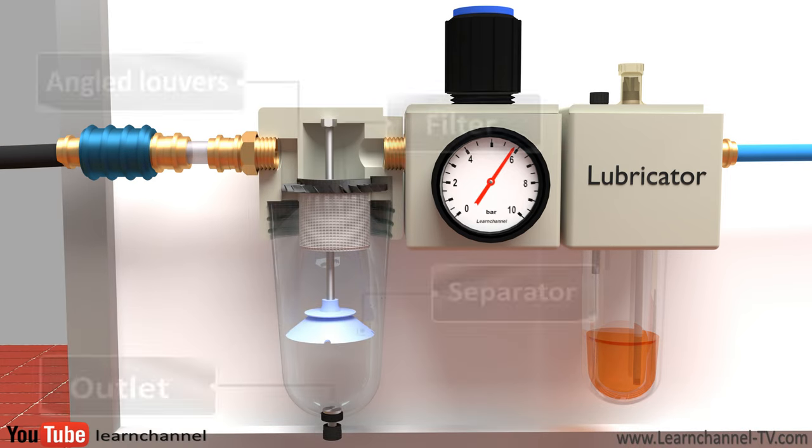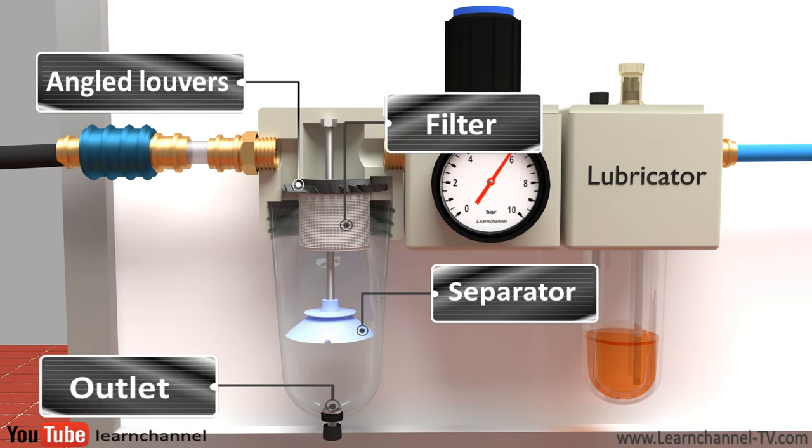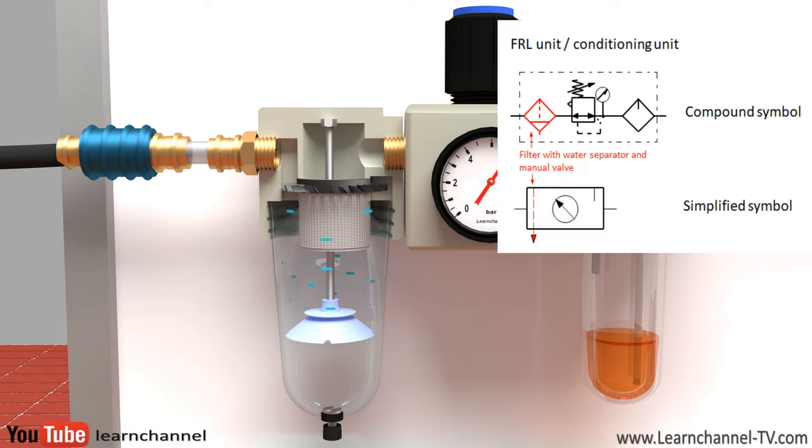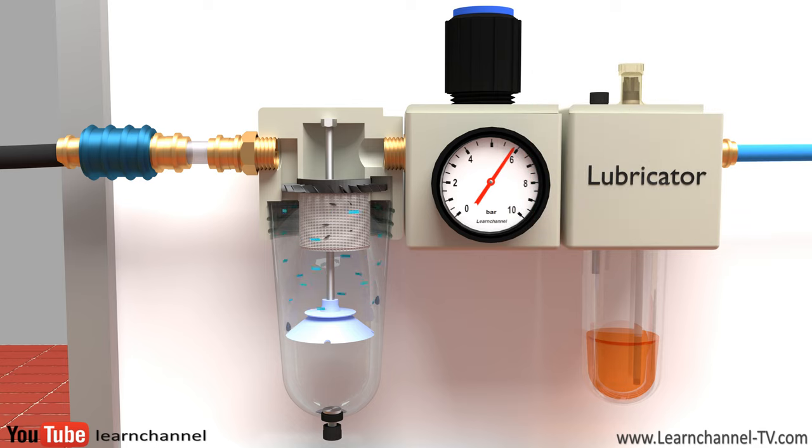Air enters the air filter through angled louvers. This causes the air to spin as it enters the bowl. Due to the centrifugal force of the rotating air, the larger particles of dirt, rust, and water are thrown against the inner wall of the filter bowl. These contaminants then flow down to the bottom of the filter bowl. The separator disc divides the filter into a zone with air circulating and a slowdown zone. This way, the condensate cannot be picked up by the air flow again.